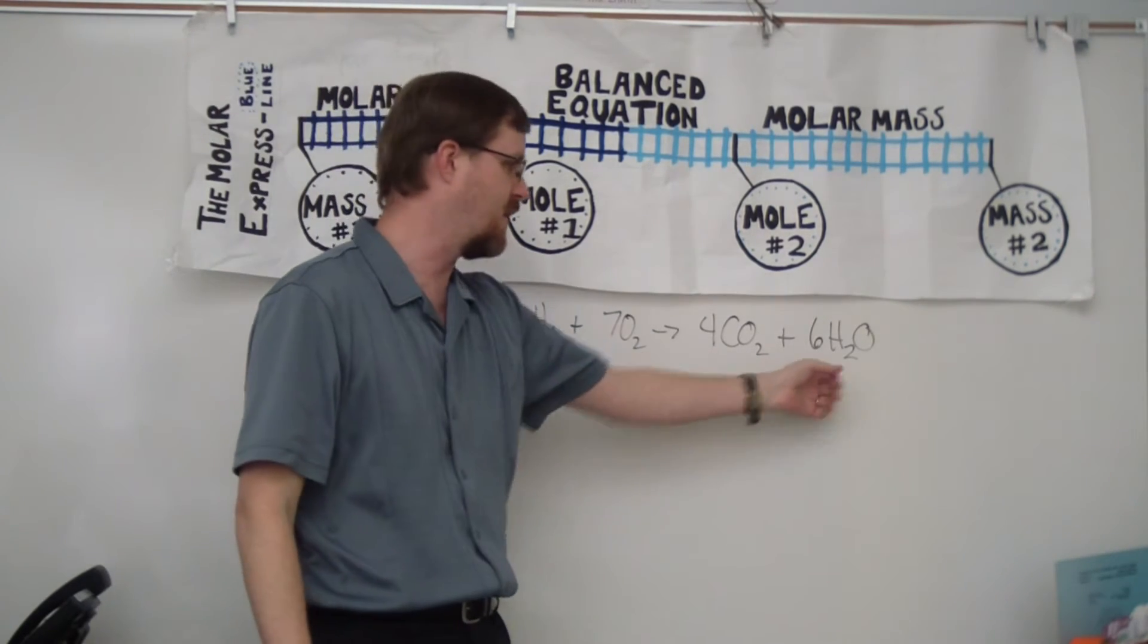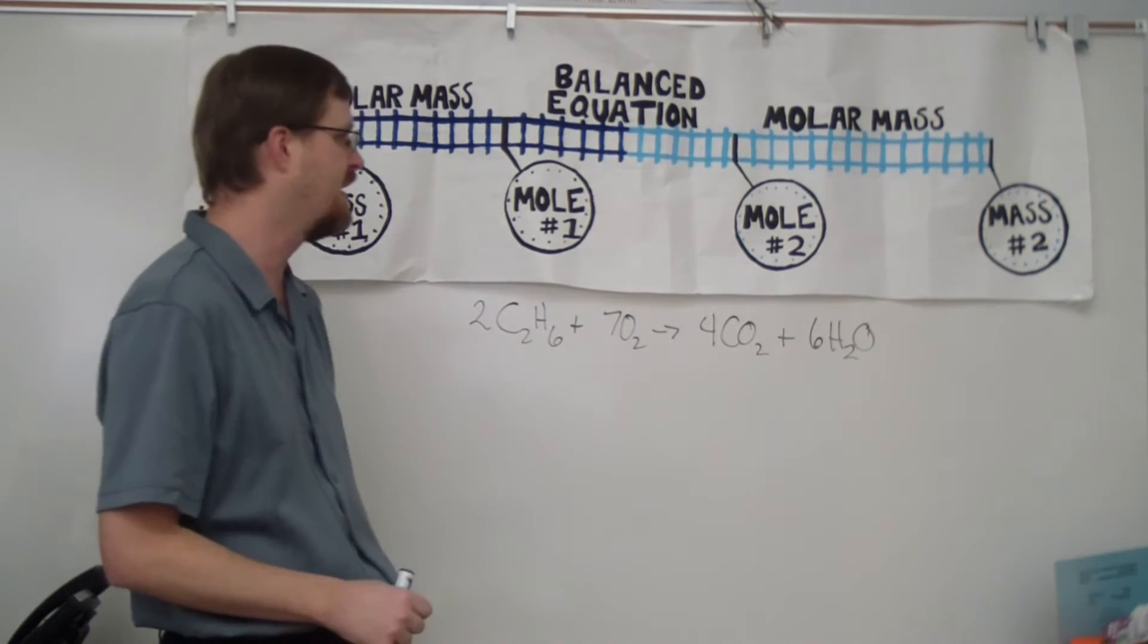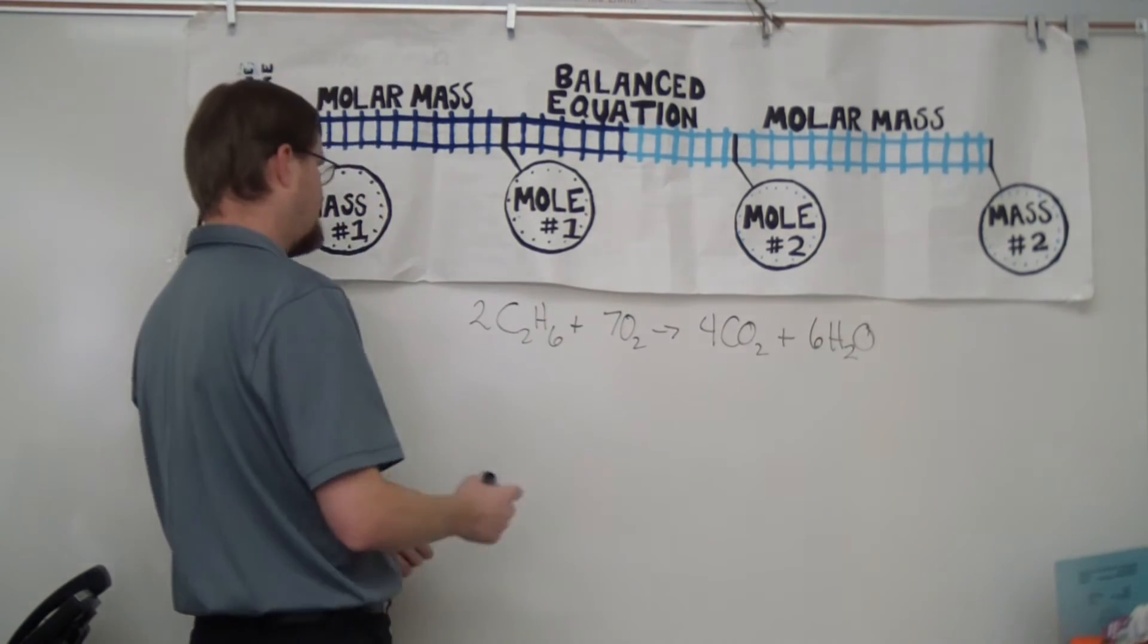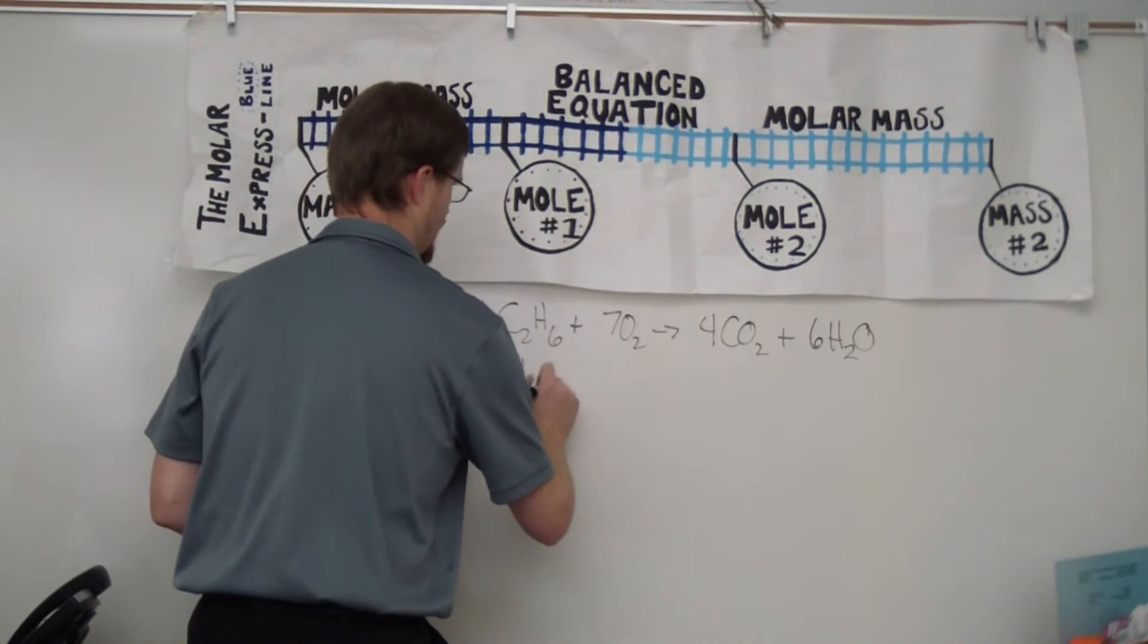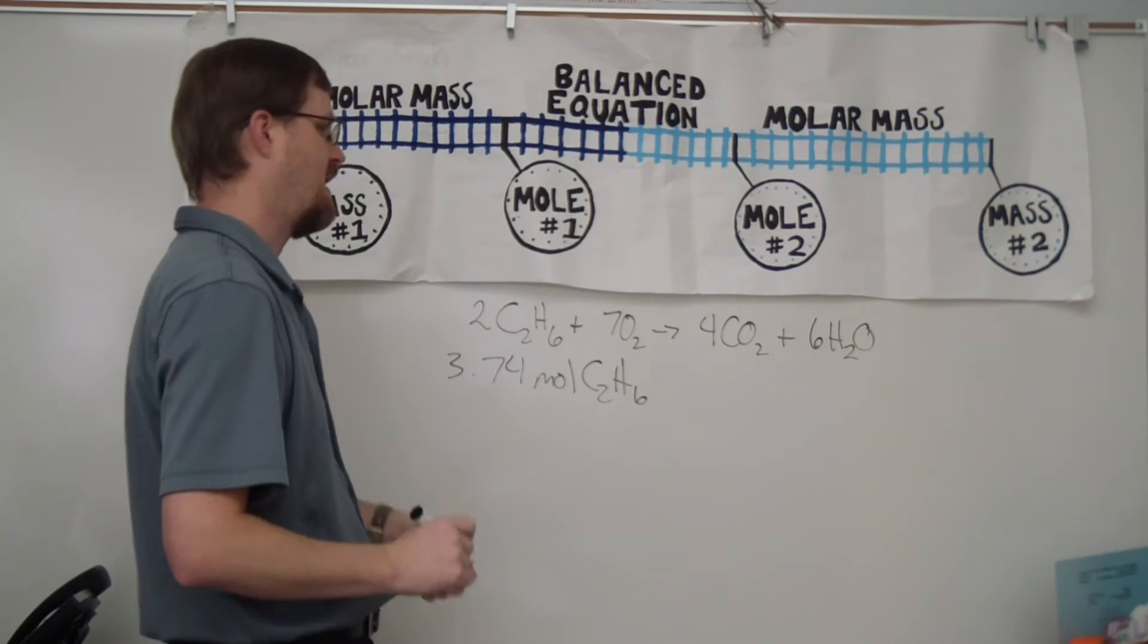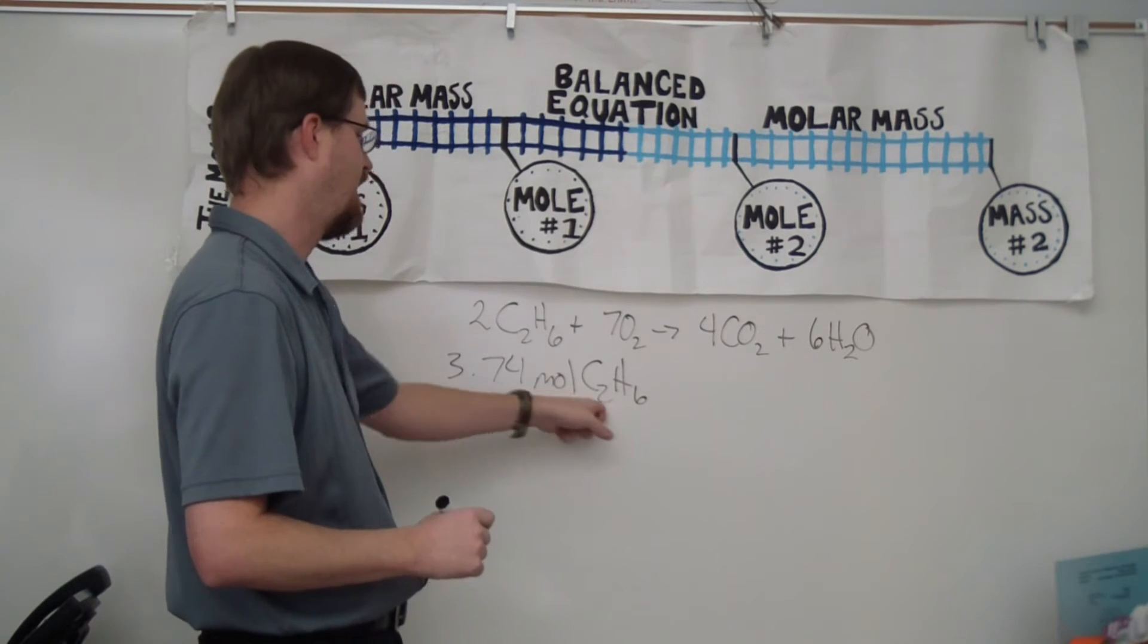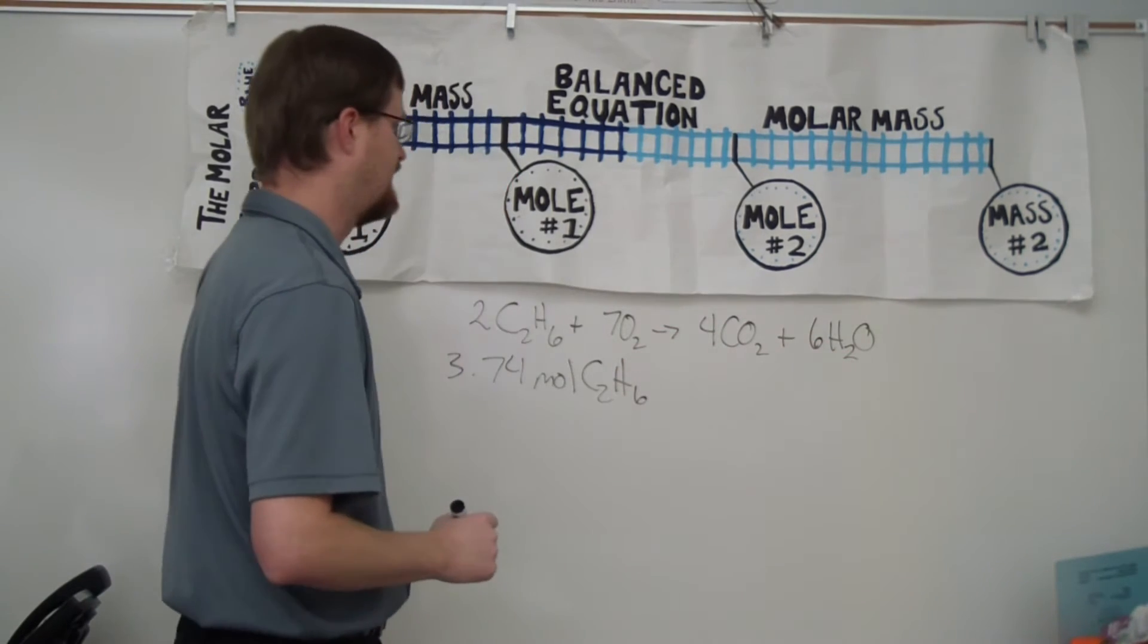Alright, so I have a sample equation right here. This is the combustion of ethane, and you can see it's already balanced. So let's say you've got 3.74 moles of ethane, the C2H6, and we want to know how much water is going to be produced. So we've got 3.74 moles of ethane, and we're going to figure out how many moles of water this is.